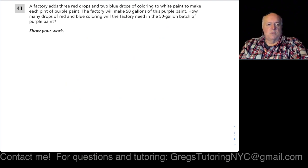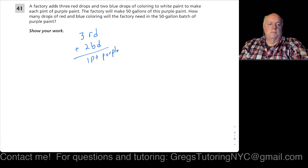Okay, I believe this is the last question of this set. A factory adds three red drops and two blue drops of coloring to white paint to make a pint of purple. The factory will make 50 gallons of this purple paint. Somehow it seems we need to do a conversion because this is in pints, we need to get to gallons, or we need to map the gallons to pints.